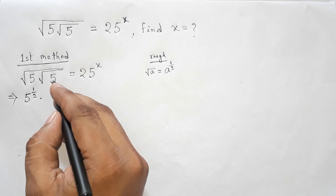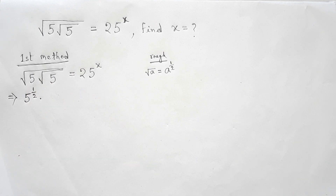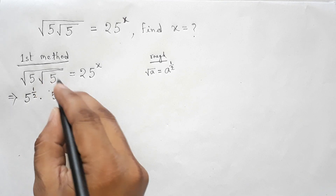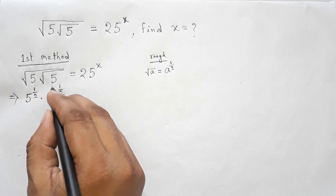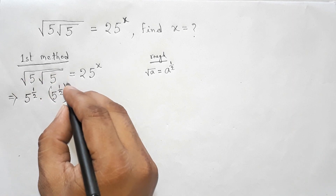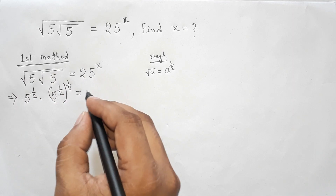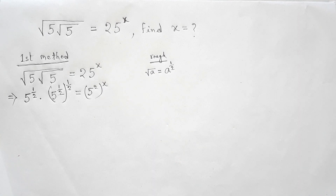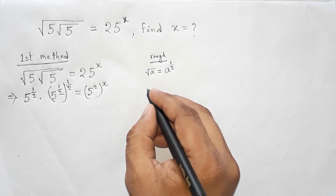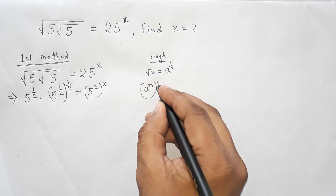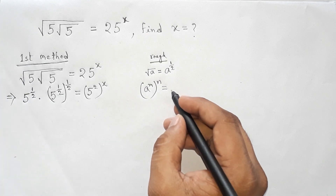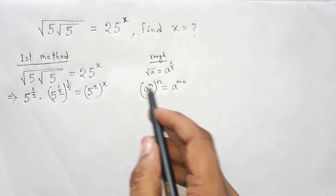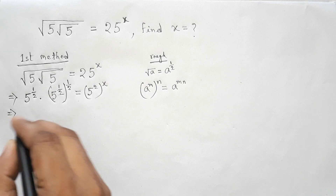For the nested root over 5, we first write root over 5 as 5 to the power 1 by 2, then apply the outer root as an additional power of 1 by 2 in brackets. On the right side, we rewrite 25 as 5 squared in the first bracket, to the power x.